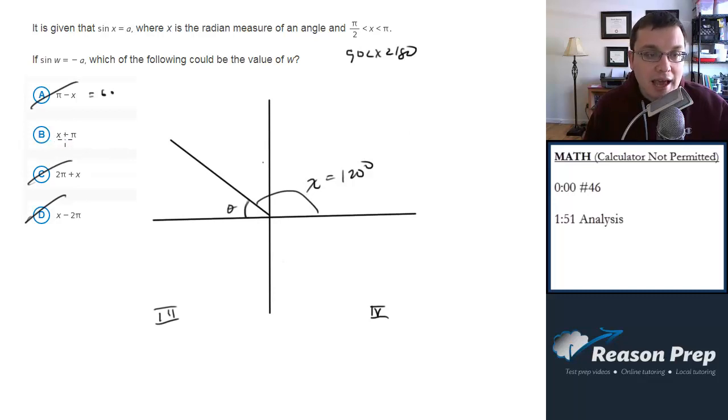How about b? x minus pi. So if I do 120 minus 180, I'm going to get negative 60, which puts me in quadrant 4, which is exactly what I'm looking for. So the answer to this one is b.